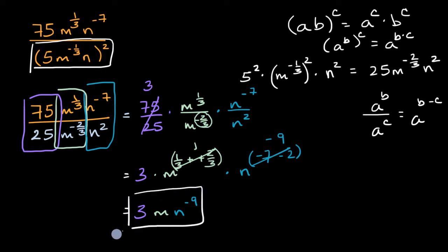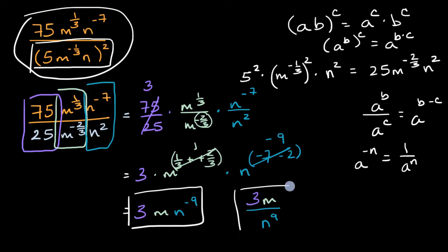And that is strangely satisfying to take something that hairy and make it less hairy. Now some folks might not like having a negative 9 exponent here. They might want only positive exponents. So you could actually rewrite this and we could debate whether it's actually simpler or less simple. But we also know the exponent properties, that if I have a to the negative n, that is the same thing as 1 over a to the n. So based on that, I could also rewrite this as 3 times m. And then instead of saying times n to the negative 9, we could say that is over n to the 9th. So that's another way to rewrite that expression.